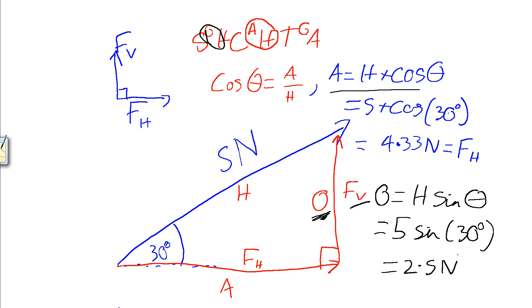So, this method allows us to find the vertical and horizontal components of this force, so they can be treated separately, breaking down a question into simpler parts, more bite-sized chunks. Now, we may have noticed that we've got our 4.33 newtons acting horizontally, and our 2.5 newtons acting vertically.